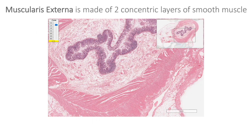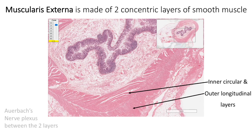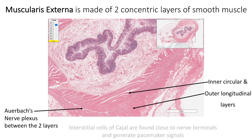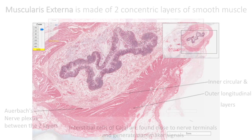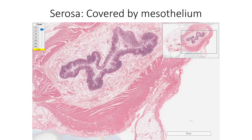Muscularis externa is made of two concentric layers of smooth muscle: an inner circular layer and an outer longitudinal layer. Auerbach's plexus of nerves is found between these two layers. Interstitial cells of Cajal are found between the nerve terminals and smooth muscles, both in the submucosal layer and in the muscularis externa layer, and these generate the pacemaker signals. The entire circumference of the small intestine is covered by serosa, which is the outer connective tissue covering with adipose tissue, large blood and lymph vessels, and nerves, all covered by a layer of mesothelium. However, the serosa layer is absent along the line of attachment of the mesentery and on the posterior wall of the duodenum, where it is retroperitonealized.